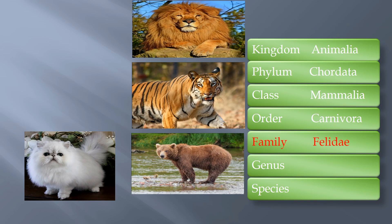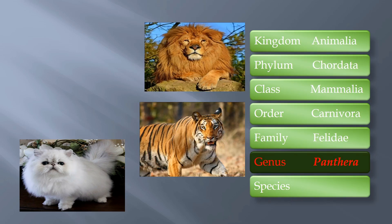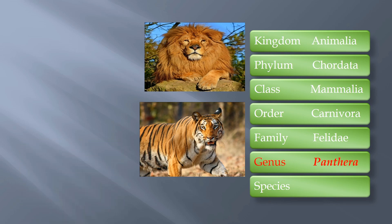The next level is family Felidae. Felidae means organisms having retractable claws. Here, bear does not have retractable claws, so it is removed from our group of organisms. The next level is genus, and tiger belongs to genus Panthera. Panthera means organisms that roar. Here, cat purrs, so it is eliminated.